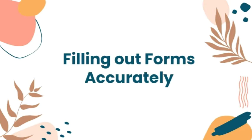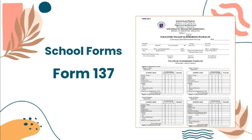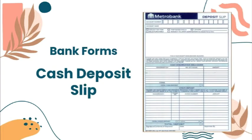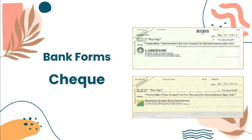Here are some examples of forms. We have school forms like the registration form, Form 137, and Form 138. We also have bank forms like the cash deposit slip, withdrawal slip, and e-check. There will be times that we will be asked to fill out forms for certain documents — this may be at the school, the bank, or the office.